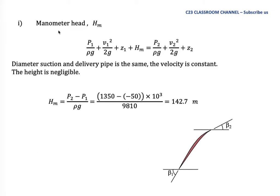In the first question we need to calculate the manometric head. We calculate this using the Bernoulli equation because water flows from the eye into the inlet point, through the blade, and comes out at point number two. Since the fluid is liquid, we assume it is incompressible and relate the flow using Bernoulli. We assume the pump head equals the manometric head, so we have p over ρg, v-squared over 2g, z, and head of pump replaced with manometric head.